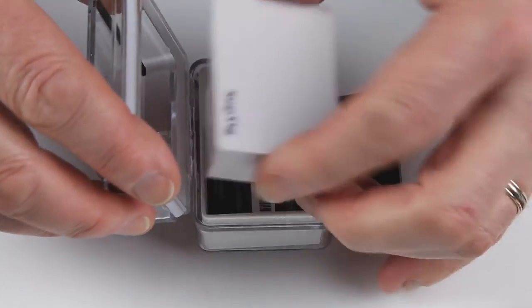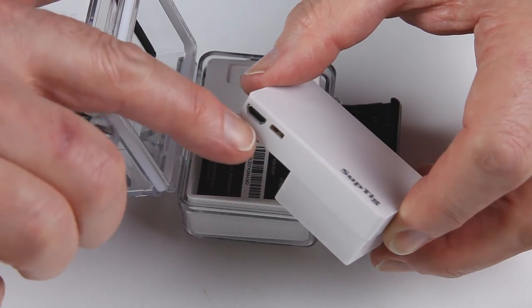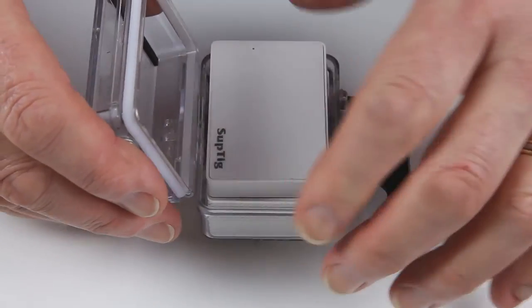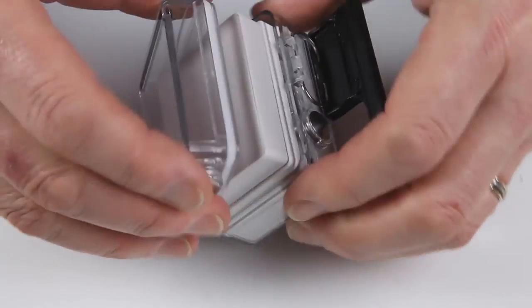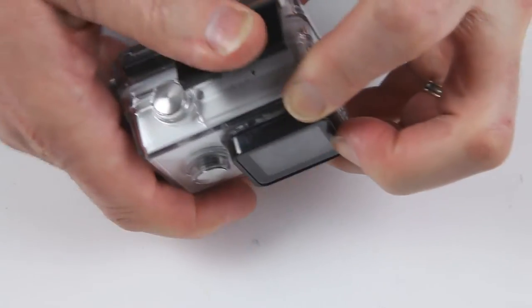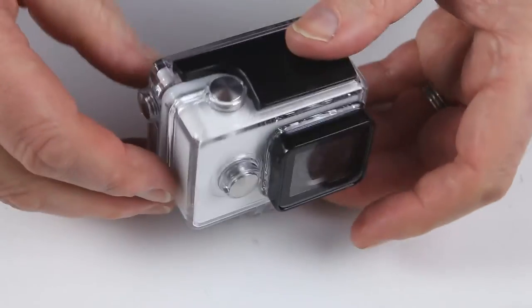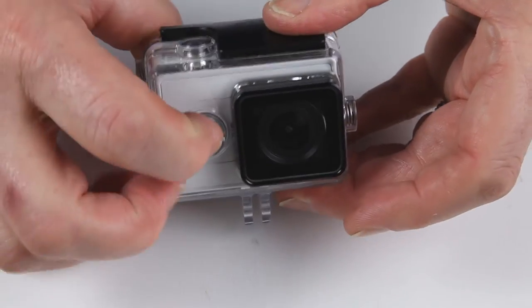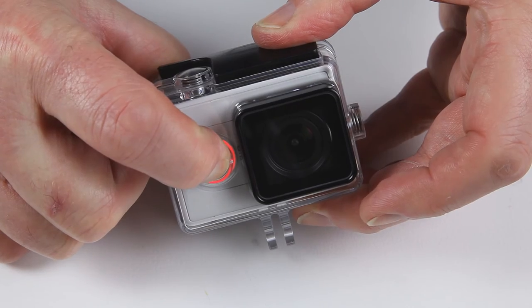You charge this by using a USB on the bottom here. And so you can charge it separately from the camera, which is good. And then it's exactly the same. Again, just pop it into the underwater housing. Everything's protected then, and then you've got a massive amount of battery power there. And there we go.